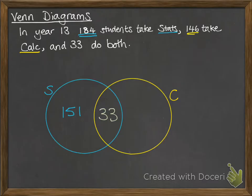So that all of the statistics students added up together makes the 184 students that take stats. We'll do the same for calculus. There's 146 of those. So if we take off the 33, we'll have 113 left over that only do calculus. And the 33 added to them will make our total that we needed of 146 that do calculus all together.